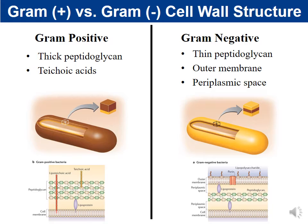This slide compares gram-positives and gram-negatives. Gram-positives have thick peptidoglycan — about eight times thicker than gram-negatives — and have teichoic acids. Gram-negatives have thin peptidoglycan, lack teichoic acids, and have an outer membrane with a periplasmic space between the outer membrane and cell membrane. In your question set, there's a question asking you to diagram the cell walls for gram-positive versus gram-negative.